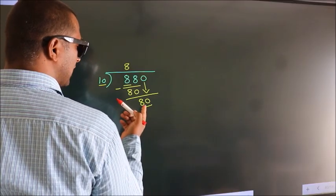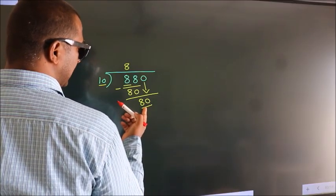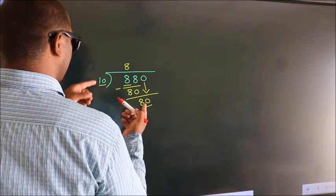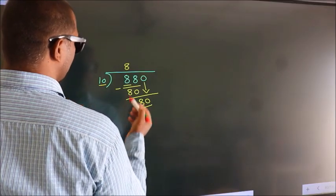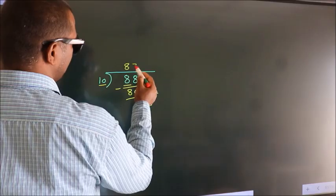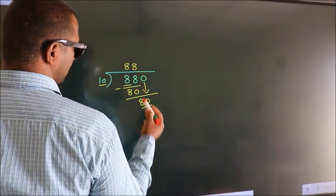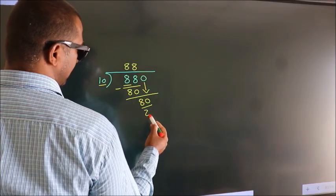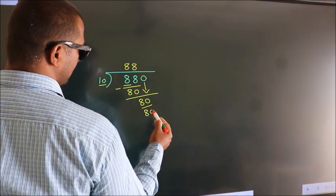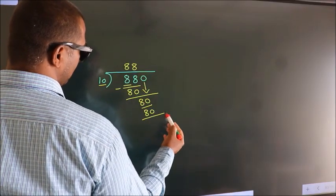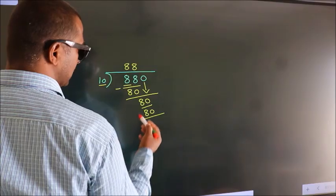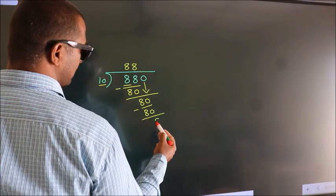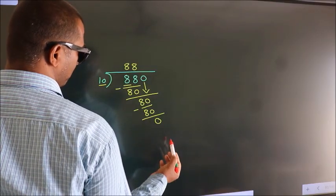When do we get 80? In the 10 times table, 10 eights are 80. Now we subtract. We get 0.